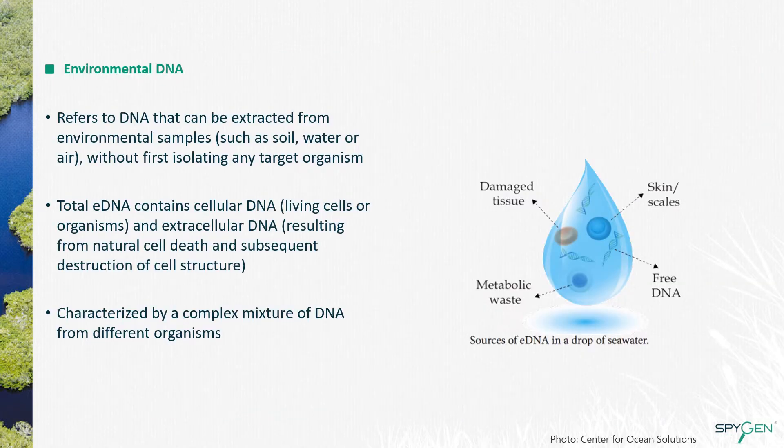But what is environmental DNA or eDNA? eDNA refers to the DNA that can be extracted from environmental samples such as soil, water, air, feces, honey, or whatever can be collected in the field without first isolating any target organism. It is characterized by the complex mixture of DNA from different organisms and can contain cellular DNA coming from live cells or organisms such as diatoms, or extracellular DNA resulting from natural cell death and subsequent disruption of the cell structure.